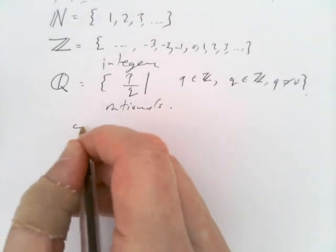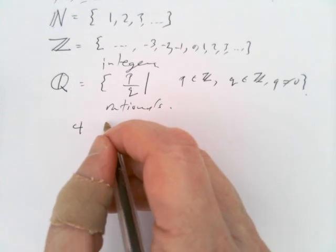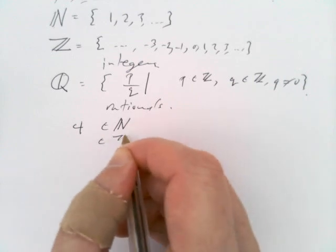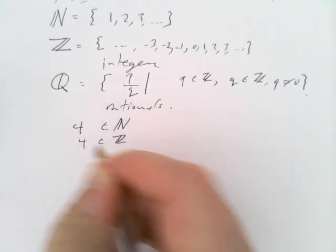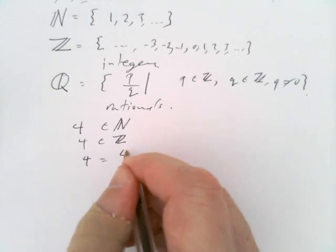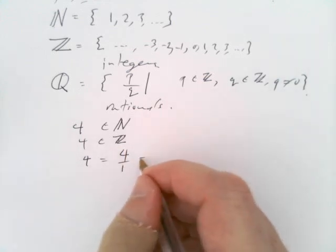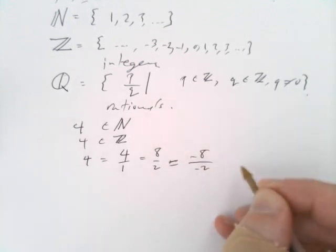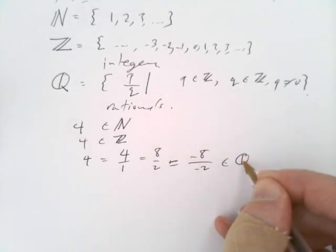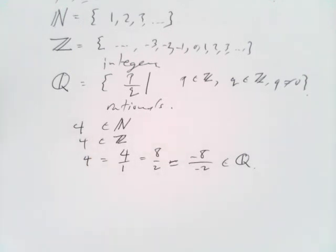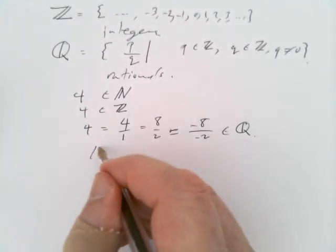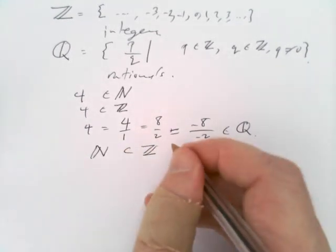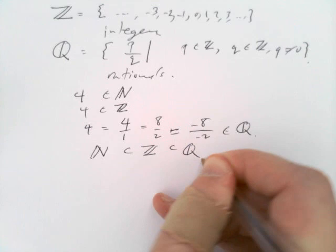For example, the number 4 is of course a natural number, but it's also an integer. It's also a rational number because 4 is 4 divided by 1, or 8 divided by 2, or minus 8 divided by minus 2. The same number can be in these different collections. The natural numbers lie inside the integers — they're a subset of the integers, and they're a subset of the rational numbers.